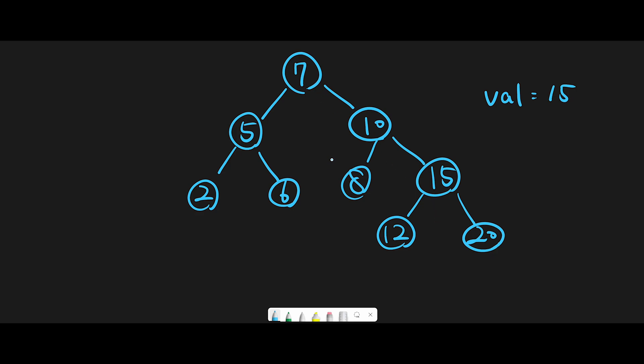And the same rule applies to all subtrees. So for example, this subtree, we have 5 as a root node, and look at the left side, we have 2. And look at the right side, we have 6, right? So left side is less than root node, and the right side is greater than root node. So looks good.